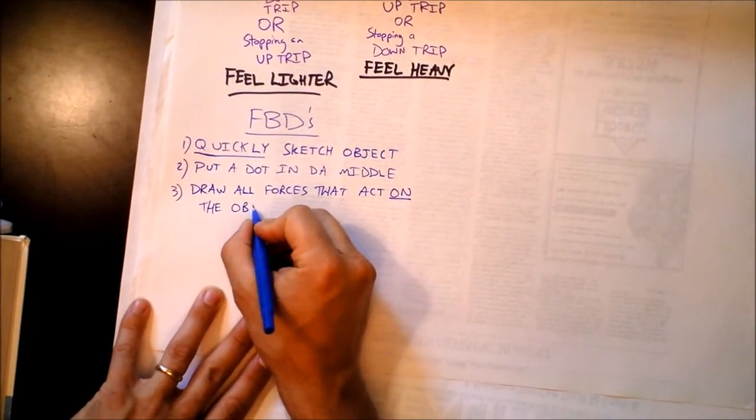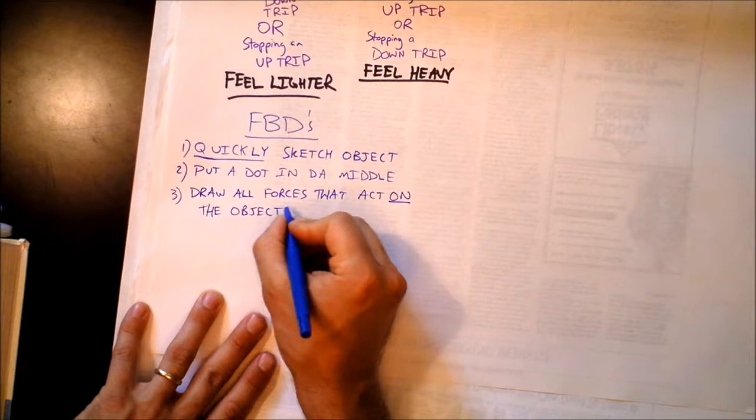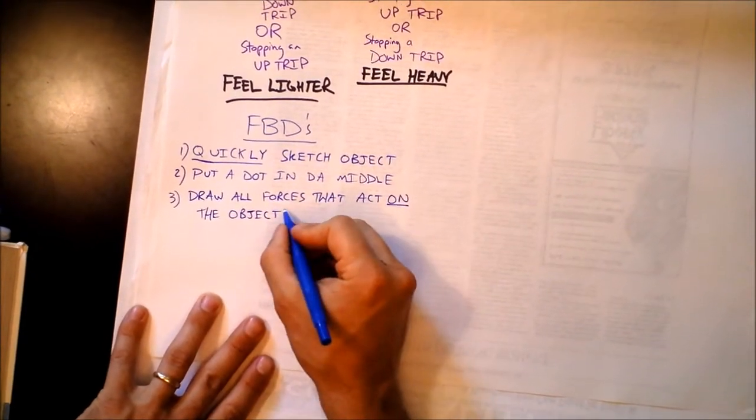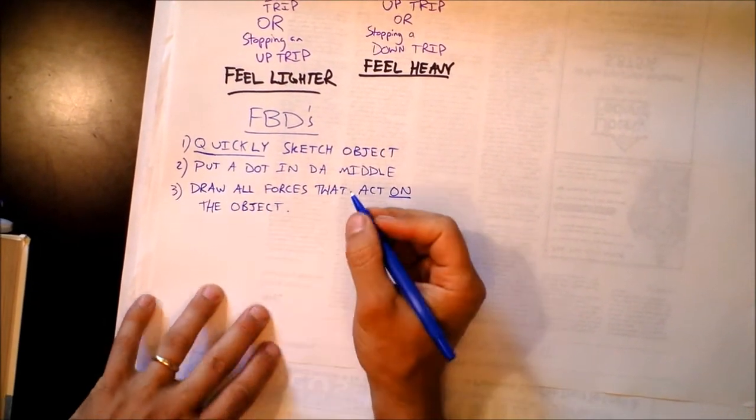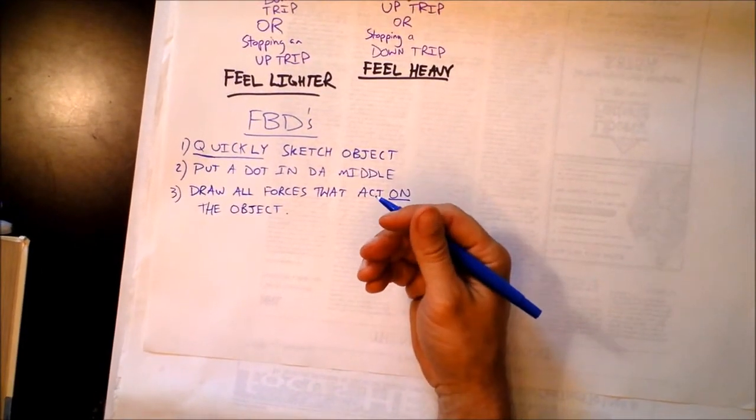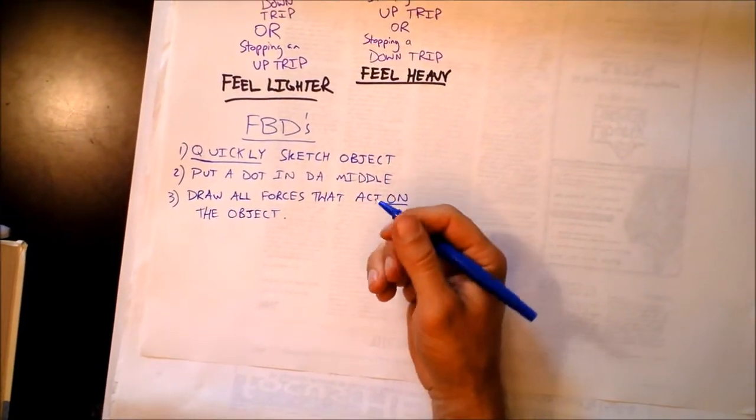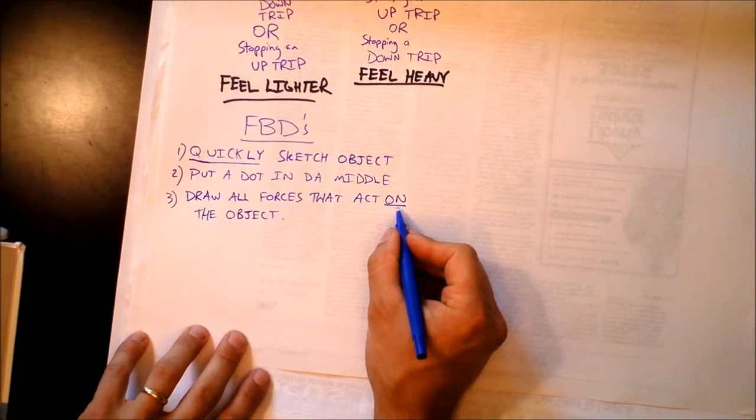Why do I want only the forces that act on the object? What about those forces that the object exerts on other things? Can you tell me why we want only the forces that act on the object?